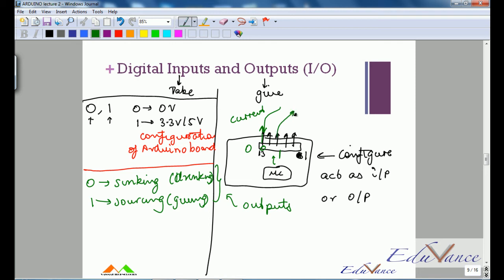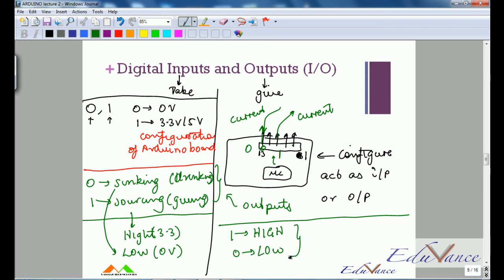Now that said, sourcing would mean logic high, which is 3.3 or 5 volts, and sinking means logic low or zero, which is at 0 volts. One means high, zero means low, and we will understand how to use this as part of our program.